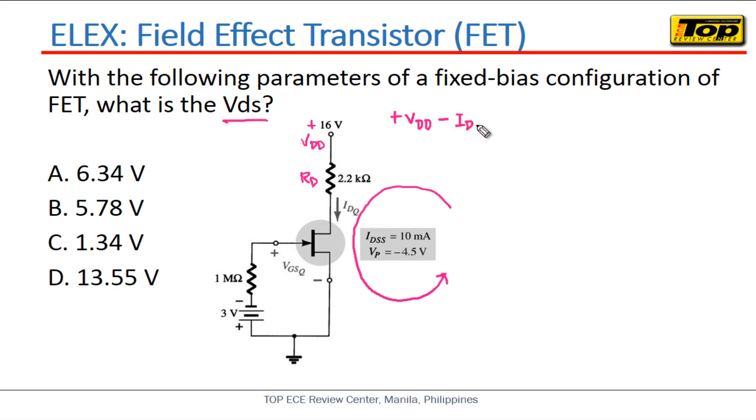So this will become IDQ, which is the current passing through the resistor multiplied by the RD, para makuha natin yung voltage drop across the RD. And then passing through also the drain and of course this is the source. Kung mapapansin nyo yung loop natin, palabas doon sa source which is negative in polarity, so therefore yung voltage drop across the drain and the source will be minus VDS and we're going to equate this to zero.